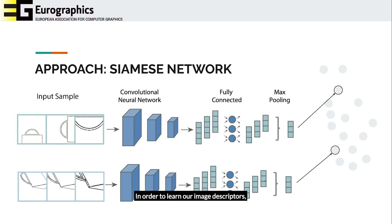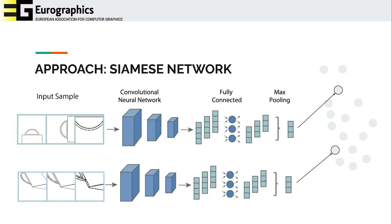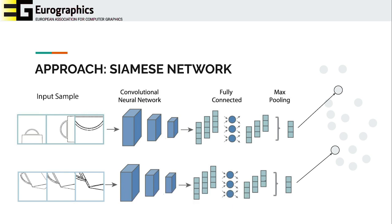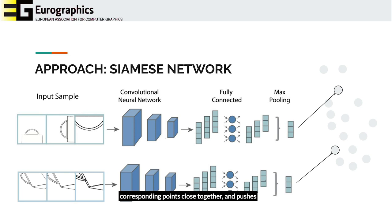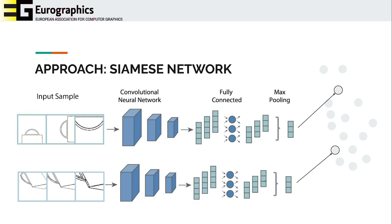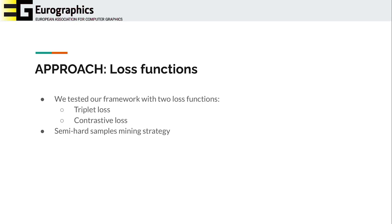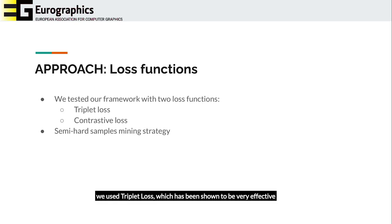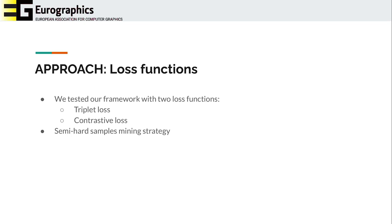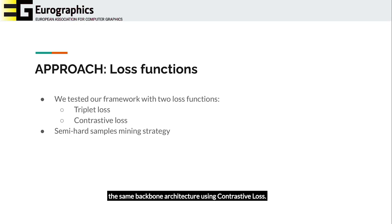In order to learn our image descriptors, we propose to use a framework based on a Siamese neural network. The input consists of a series of three images describing the local neighborhood of a target point. The goal is to learn an embedding which places corresponding points close together and pushes non-corresponding points far apart in the space. To train the proposed model, we used triplet loss, which has been shown to be very effective to learn this type of embeddings. However, for comparison and evaluation, we also trained the same backbone architecture using contrastive loss.